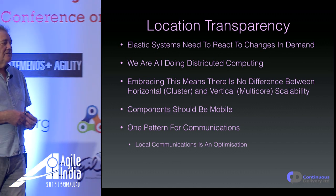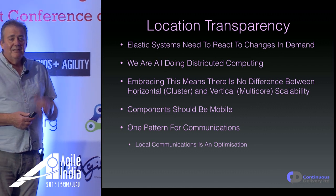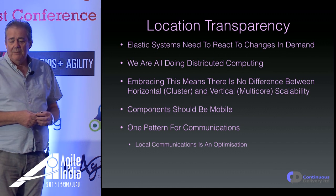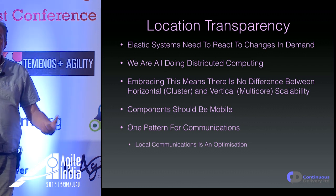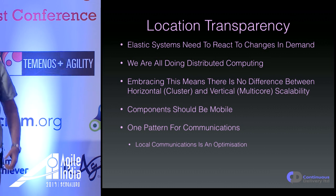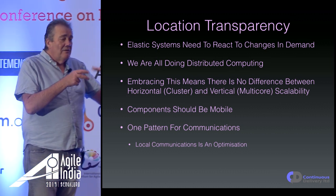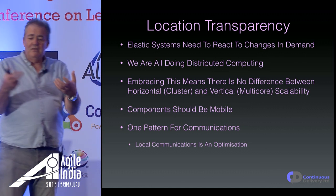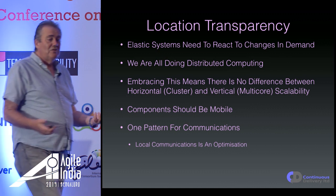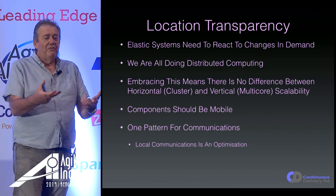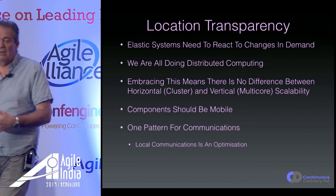Elastic systems need to react to changes in demand. Nearly all computing is increasingly distributed, and there's no real difference between cluster scalability and vertical scalability. Components need to be mobile — we need to move behaviors around and scale them out and back down. From a programming point of view, a good approach is to have one programming model. From the services' point of view, it makes no difference whether services are co-located — they just talk to each other via asynchronous messaging. The implementation of the messaging might change if they're co-located versus over the network, and you can determine that at deployment time.